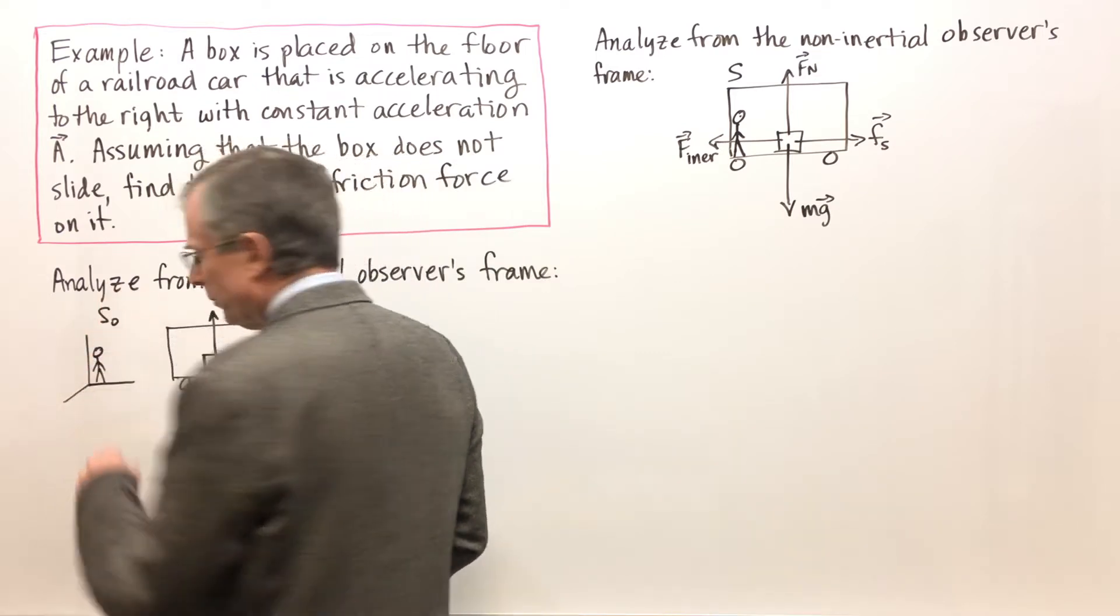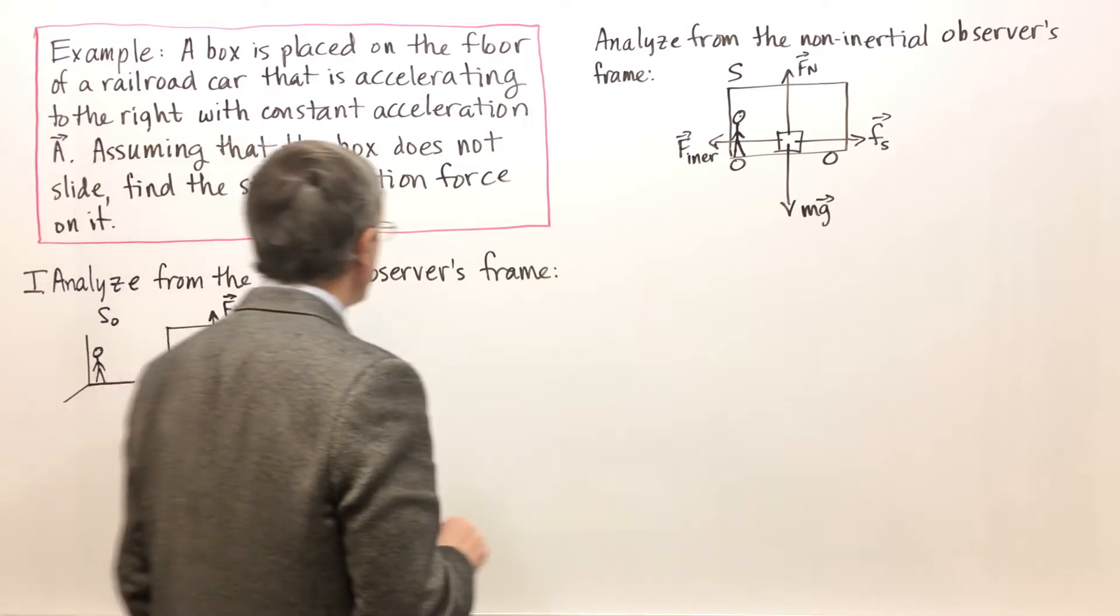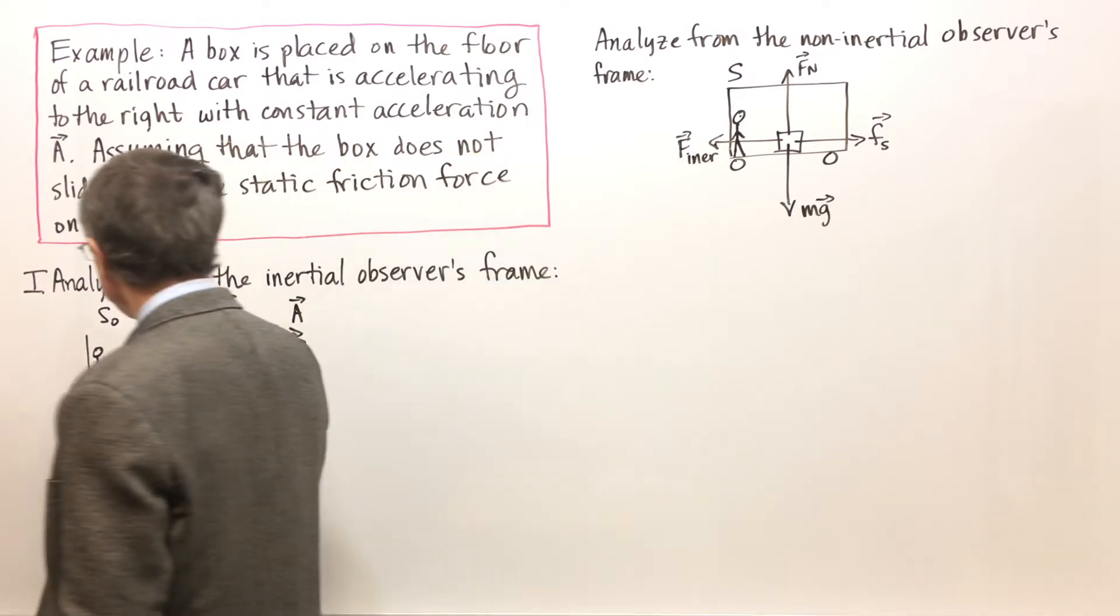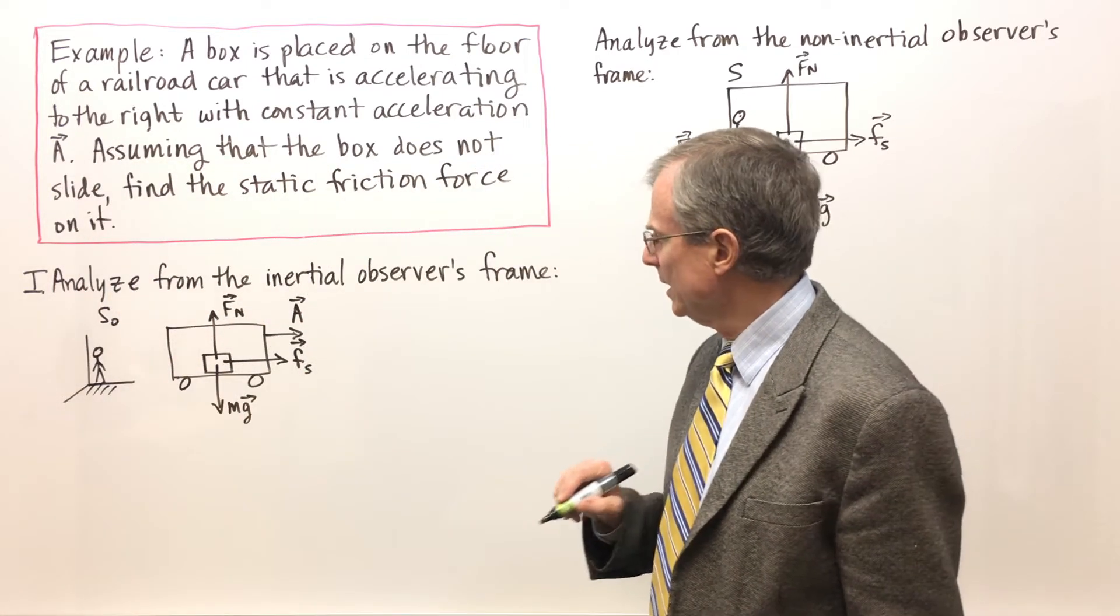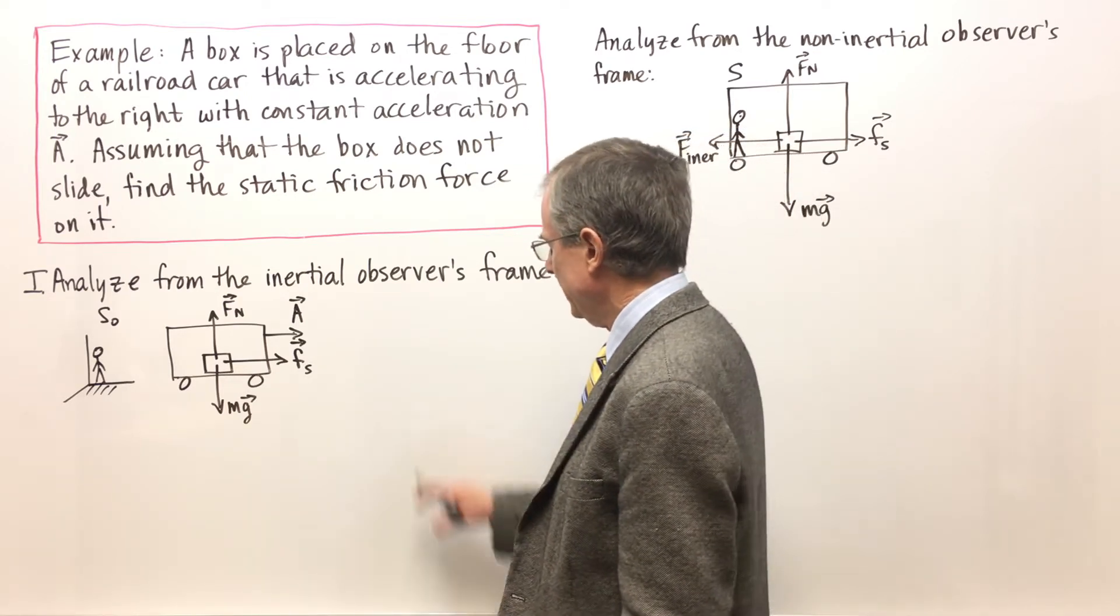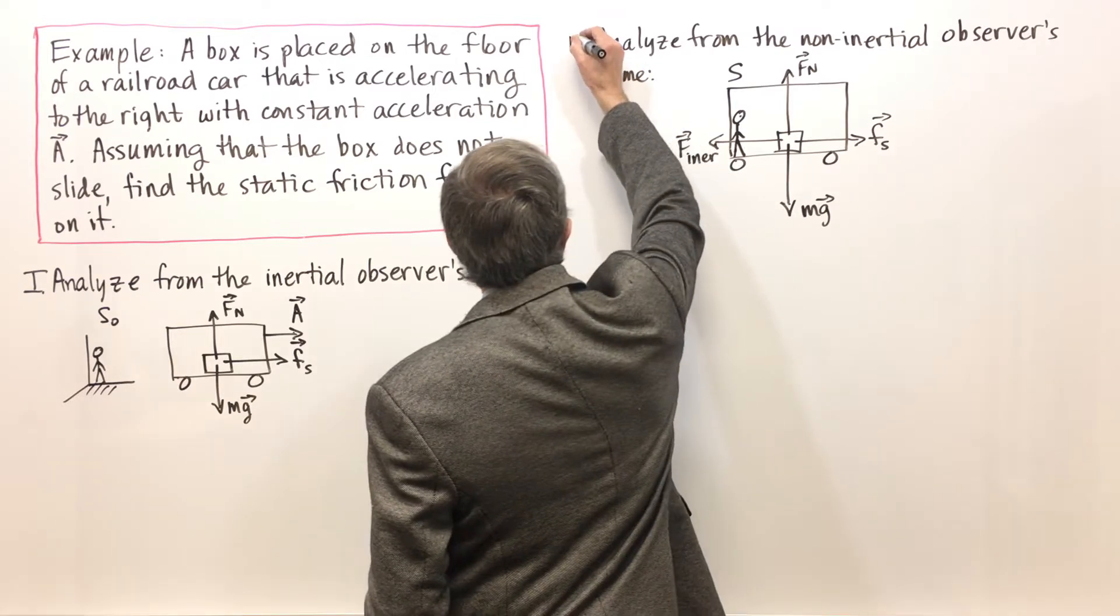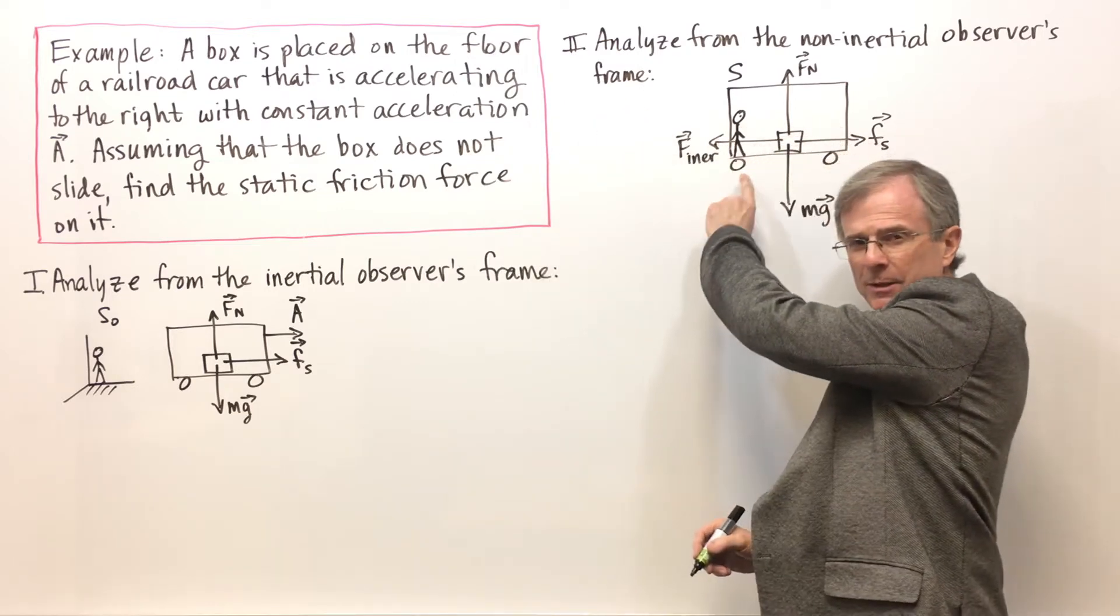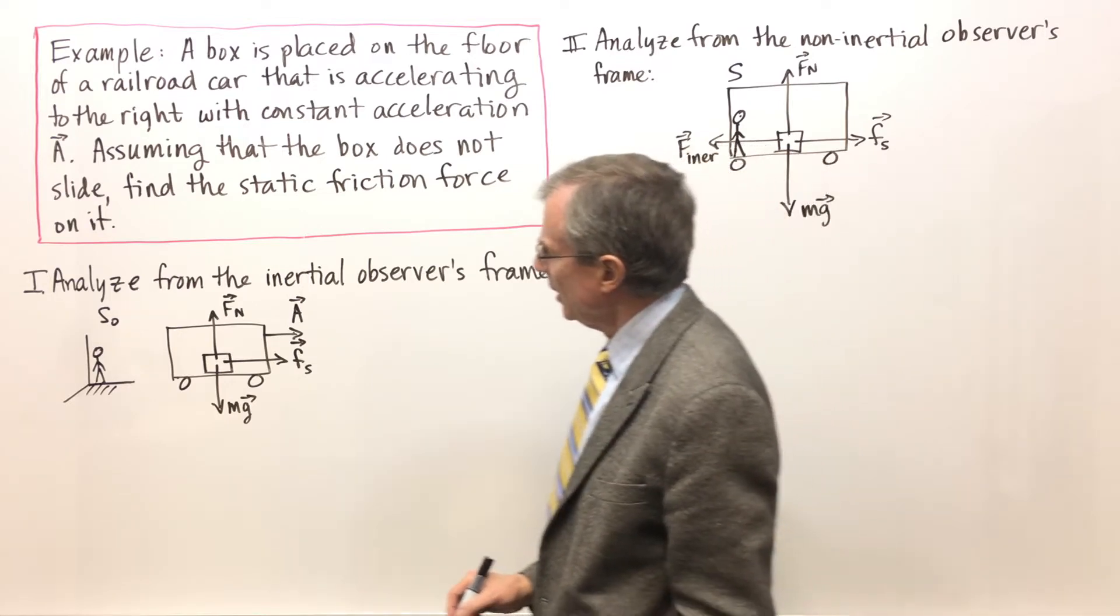We're going to first analyze this in two different ways. First from the point of view of the inertial observer. So this is the guy standing on the ground watching the passing railway car and he's in a stationary reference frame and that's inertial. Then we'll also analyze this from the point of view of an observer that's in the railway car that's accelerating with the car.